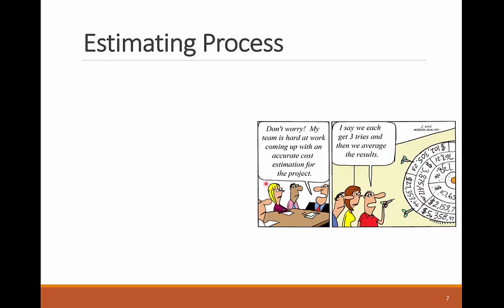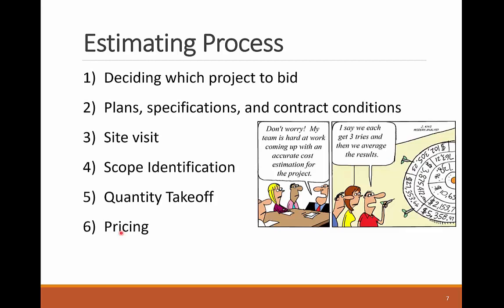Heavy construction projects usually follow a hard bidding process where the lowest bidder is awarded the project. Contractors need a systematic estimating process to develop complete and competitive bids to win the project while not being too far from the closest bidder. Being much lower than the next bidder can be very concerning, as it can mean the winning contractor missed part of the scope or used unrealistic assumptions in the estimate. Here you can see seven steps for the estimating process used in the industry. The first step is to decide if you will bid the project or not — you need the right experience, the project should not be too far from your company's base location, and it should be the right size for your company.